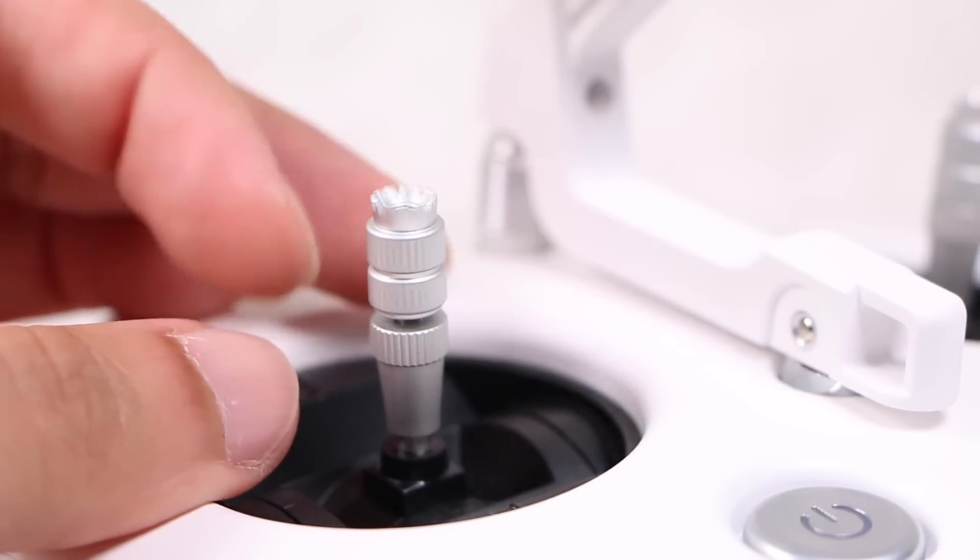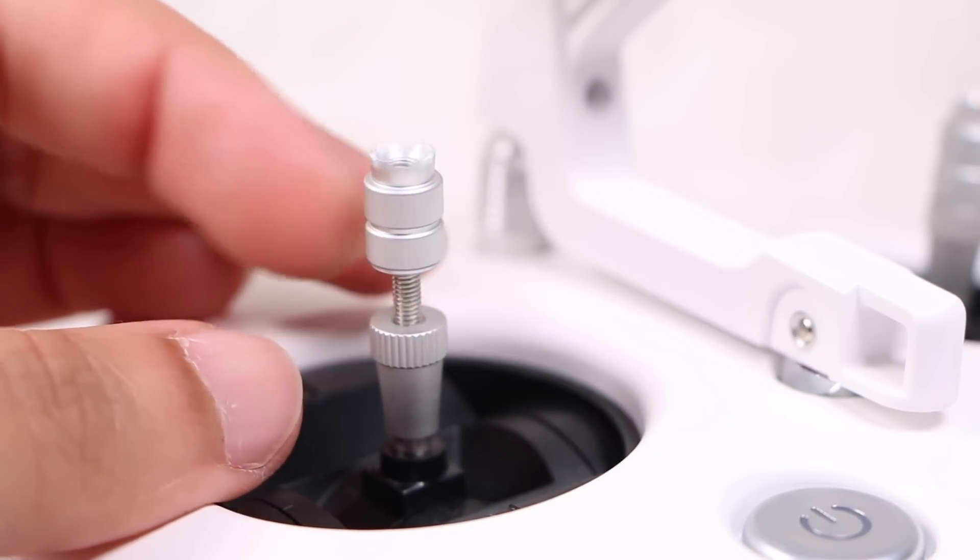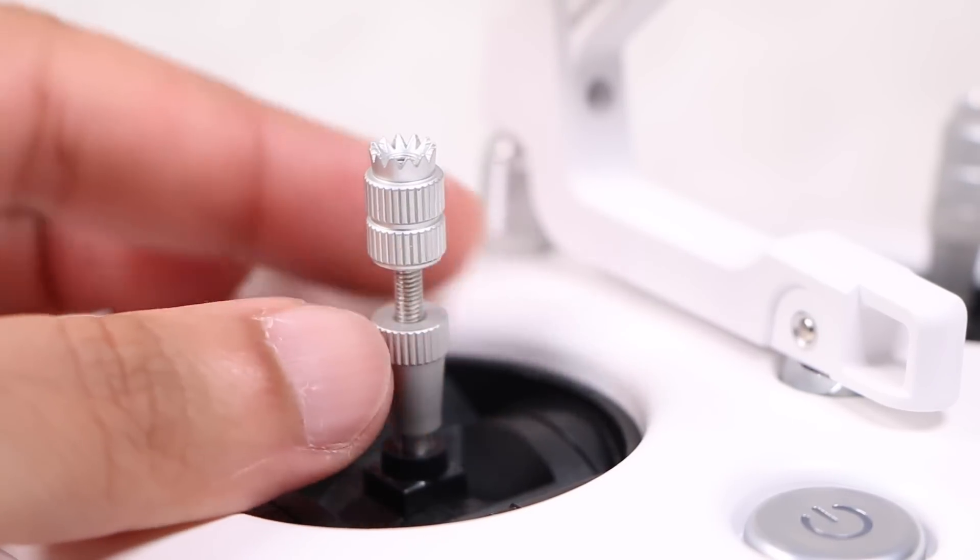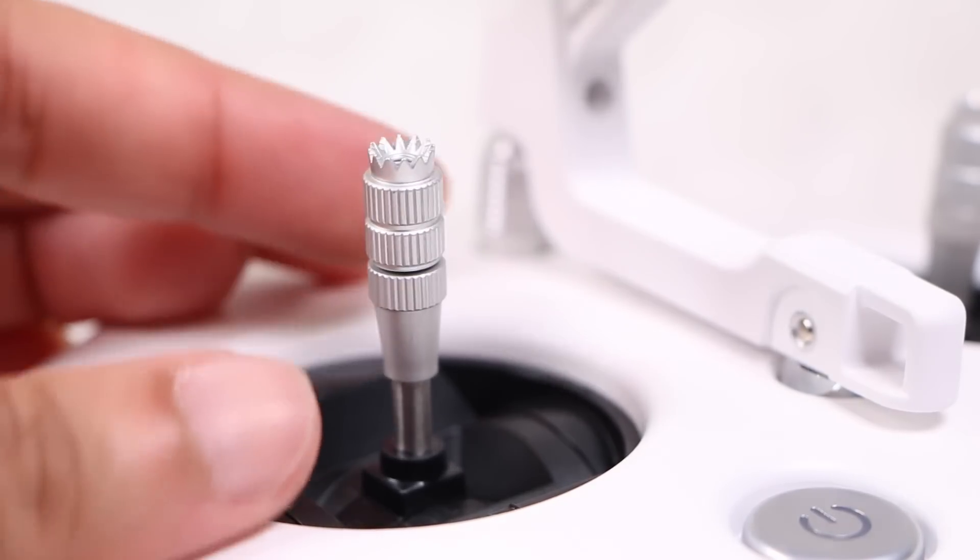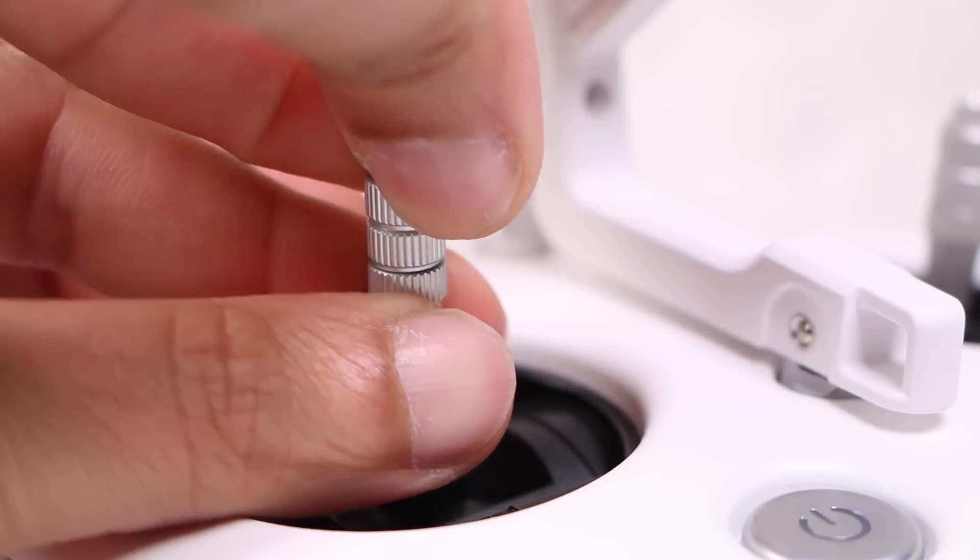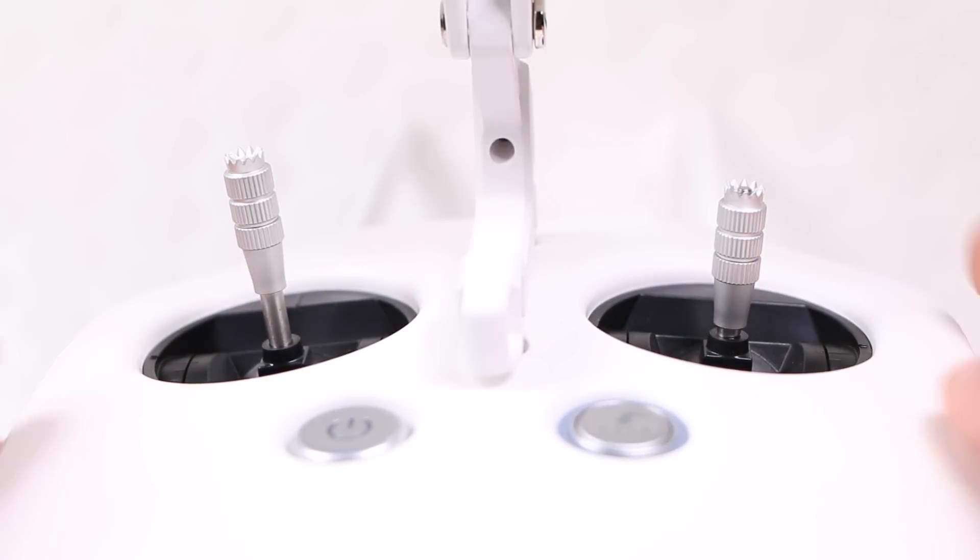Unscrewing the top half of either control stick will add to the overall length thanks to the built-in thread. Once at a comfortable length, repeat the process with the bottom half of the stick and tighten into place. That's really all there is to it. The controller stick has now been lengthened, resulting in finer adjustments when piloting the craft.